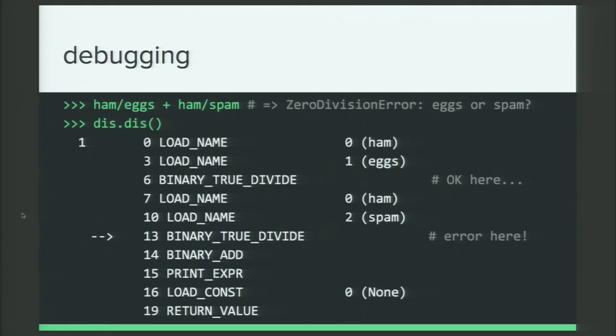If I dis the traceback, I can actually see that, okay, we were going through, we loaded ham, we loaded eggs, we did a true divide, and there was no problem. Ah, okay, so eggs was fine. Then we loaded ham again and we loaded spam. And then when we did that divide, that little arrow says that's where the problem was. So I know that the problem in my complex mathematical computations is spam, and that's what I have to go back and fix. So this can be a really cool debugging tool for certain situations.